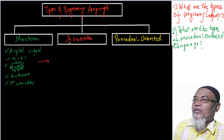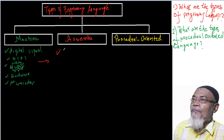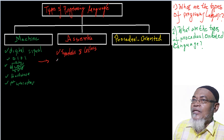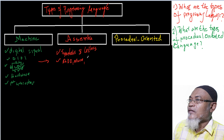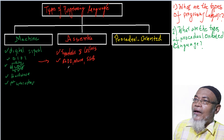From first-generation language, we move on to assembly language. Assembly language replaced the digital signals with symbols and letters, so instead of having 0s and 1s, we have symbols such as ADD and MOV.